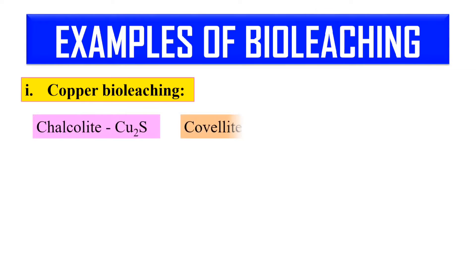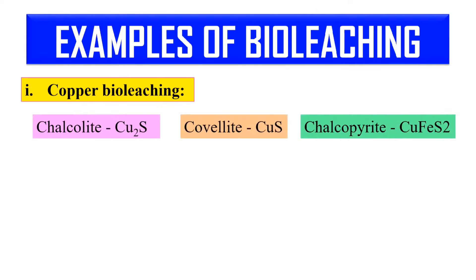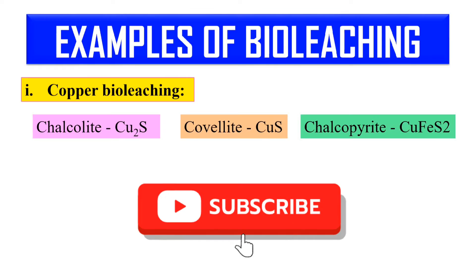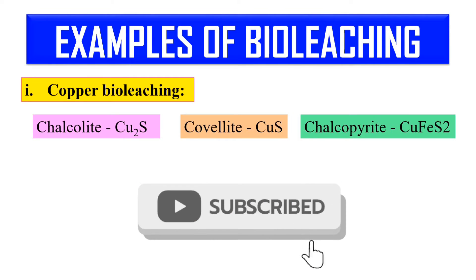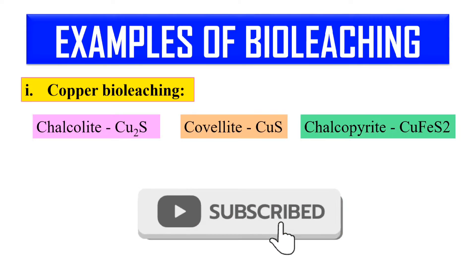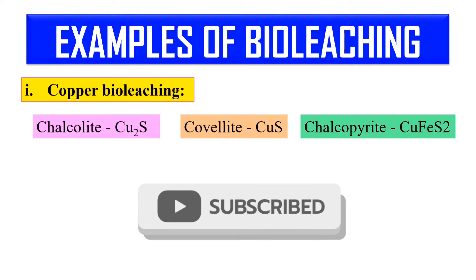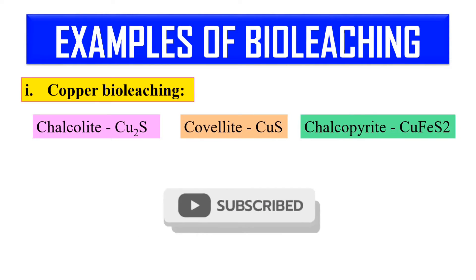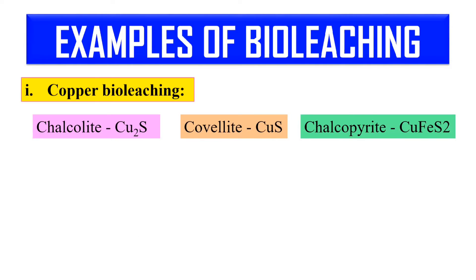So here, first of all, these are the ores of copper: Chalcocite, which has the molecular formula Cu2S; Covellite, CuS; and Chalcopyrite, CuFeS2. So these are the ores from which you can extract copper.